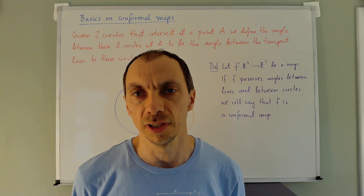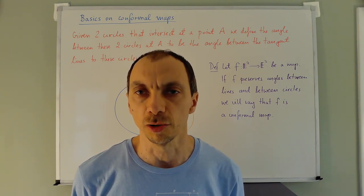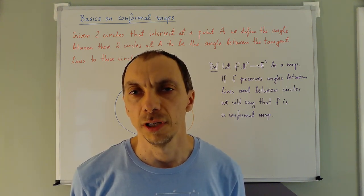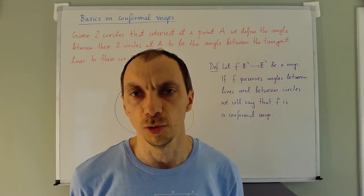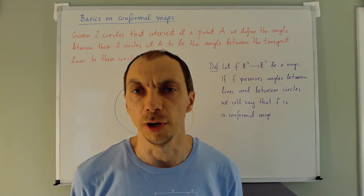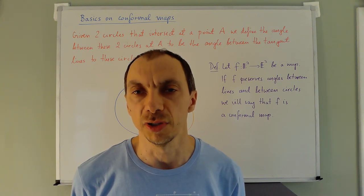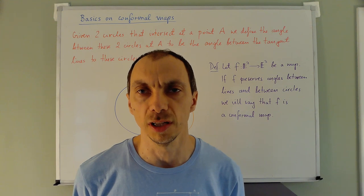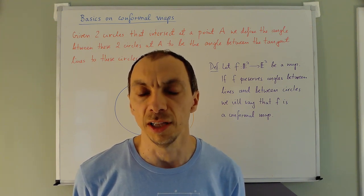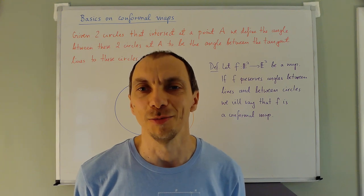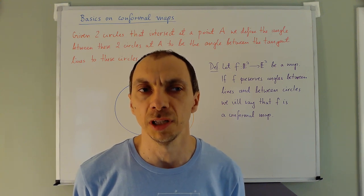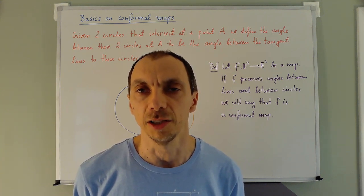We know that a tangent line to a circle is a line that intersects the circle but only at one point — it only touches it at that point. Therefore, for the purposes of this course, we define angles between just two types of objects: angles between lines, and angles between circles. And of course, similarly, you can define angles between a line and a circle. An angle between two circles is the angle between the corresponding tangent lines; an angle between lines is the usual thing; and an angle between a line and a circle is the angle between that line and the tangent line.